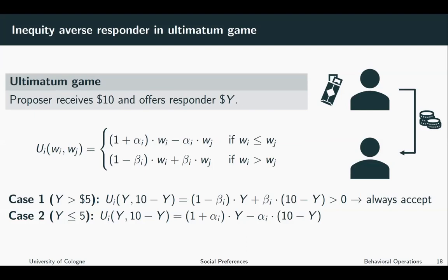And what you can see here is the responder benefits from the money he gets, but suffers from the money that the proposer gets. And so there's a trade-off when accepting the offer, the monetary payoff is maximized, but so is the inequality, the disadvantageous inequality towards the proposer.